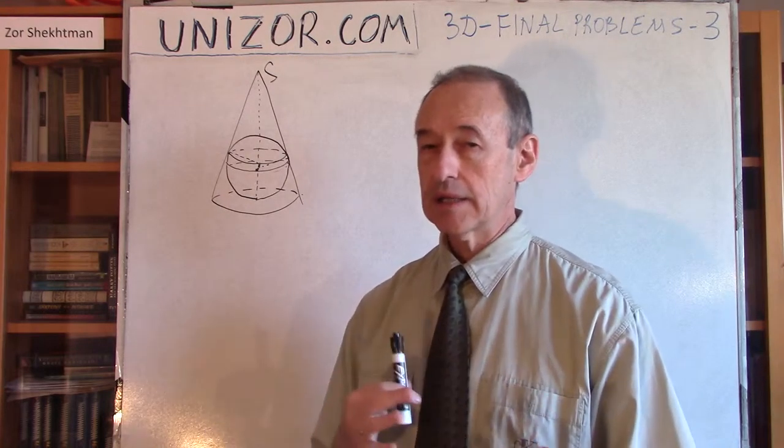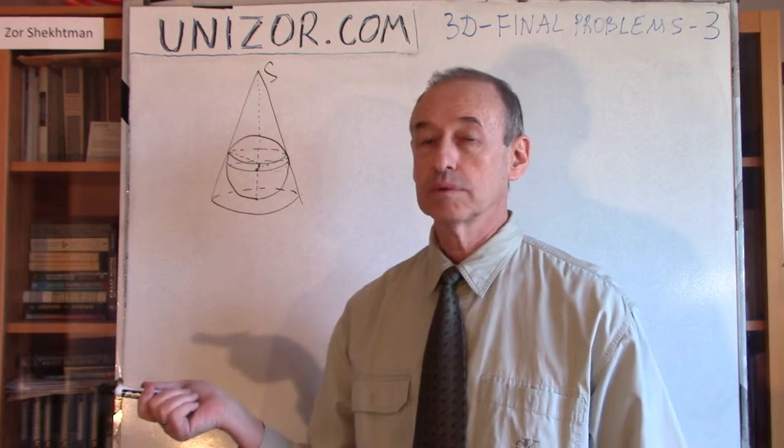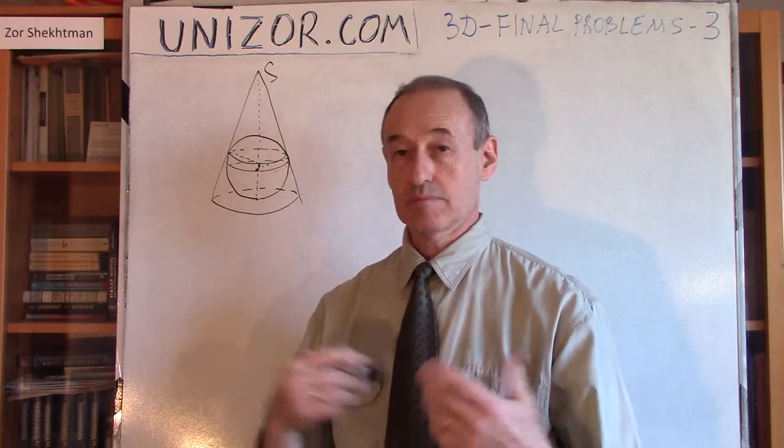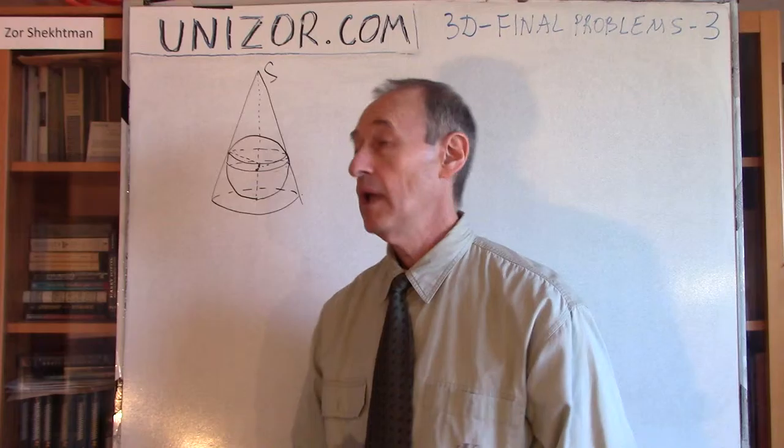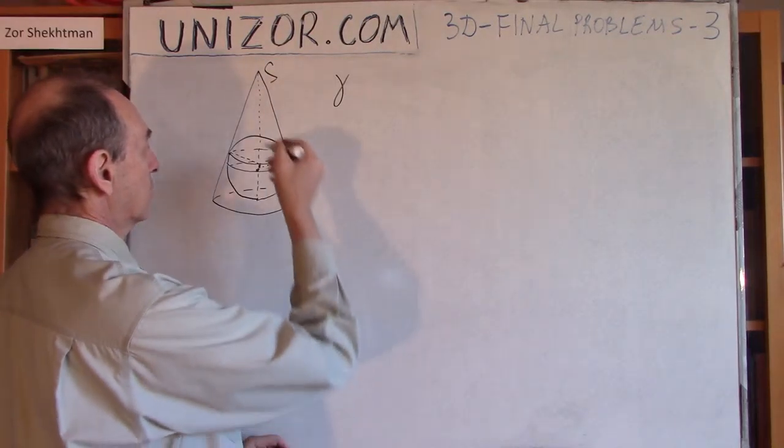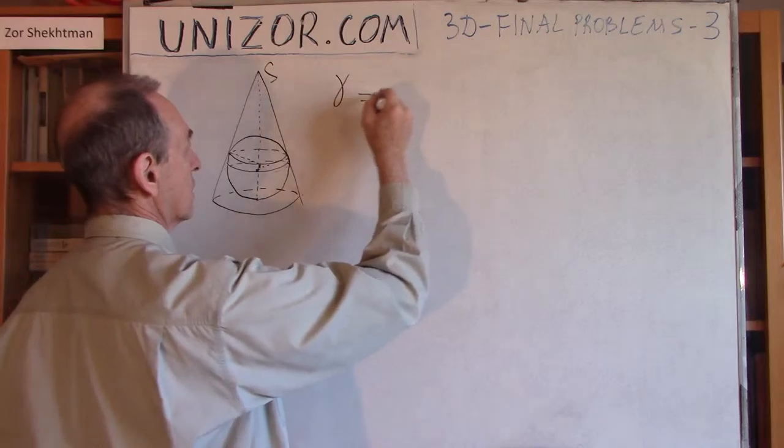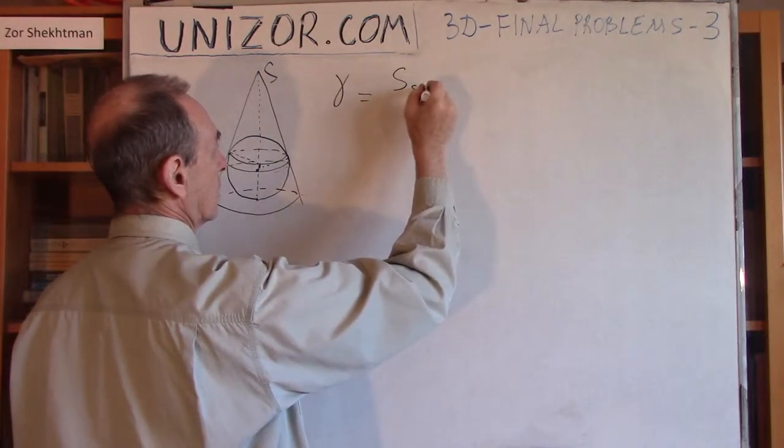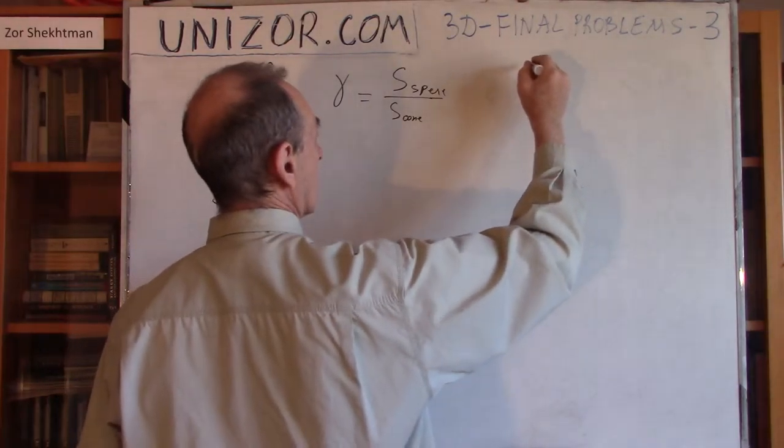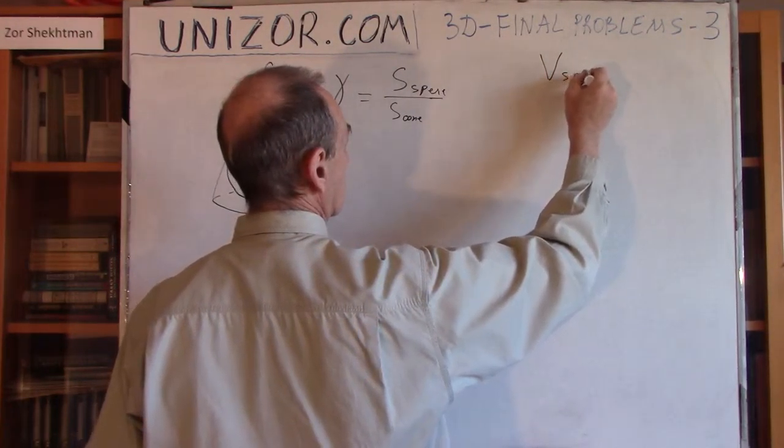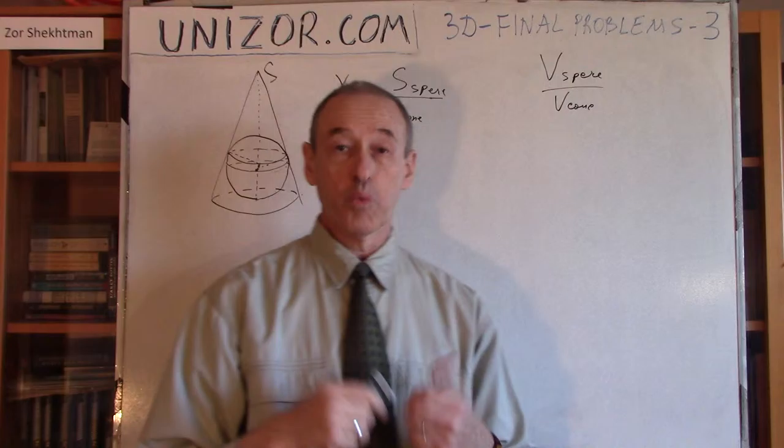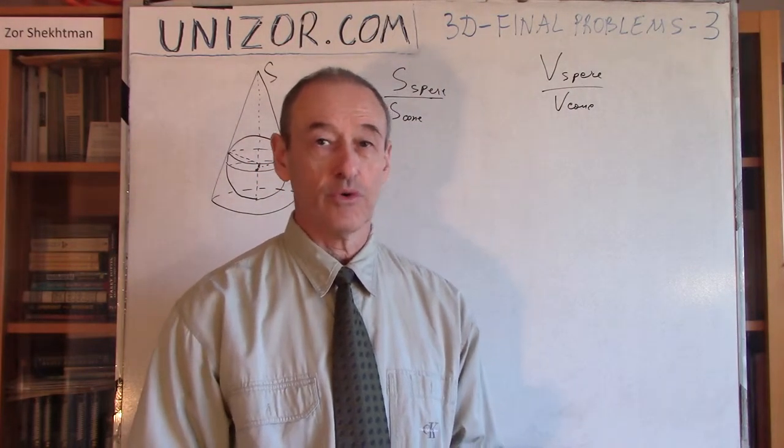That's a strange thing because I didn't really say anything about the cone. The cone can be this way or that way. The problem states to find this ratio regardless, which means it's supposed to be the same. Let's say you have this ratio of surface area gamma between the sphere and the cone - surface area of the sphere divided by surface area of the cone. What would be the ratio of volume of the sphere divided by volume of the cone? Since I didn't say anything about what's given, it's supposed to be the same for any kind of cone.